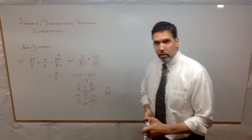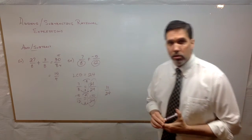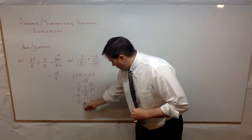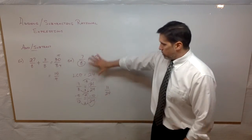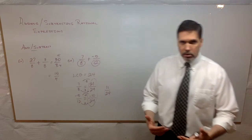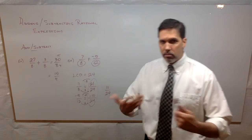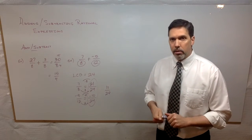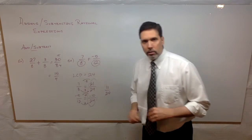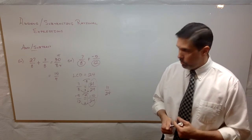Now these two fractions have common denominators, so we simply add their numerators: 21/24 plus negative 10/24 gives 11/24. And that's our simplified answer — 11/24 doesn't reduce any further. You might understand this process for adding and subtracting fractions. When we go to rational expressions, it's pretty much the same idea; it's just we have to employ some algebra and think a little harder about the least common denominator. That's usually the sticking point.